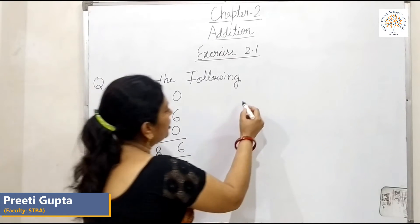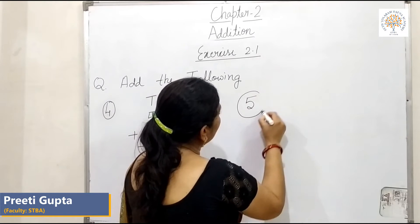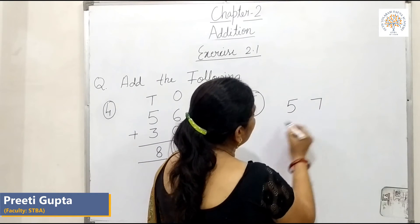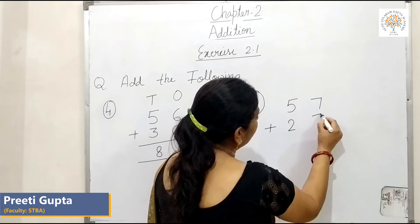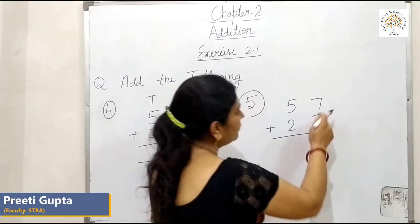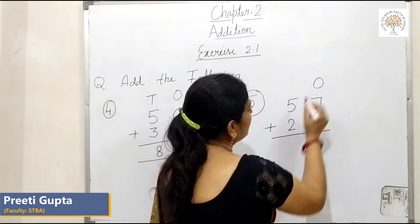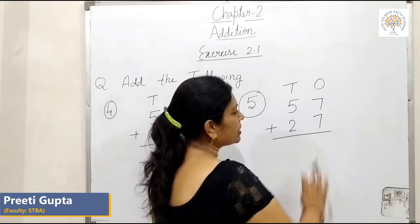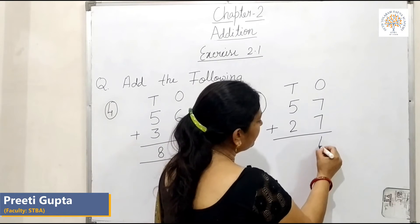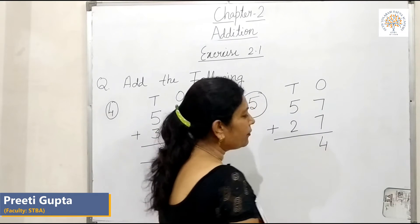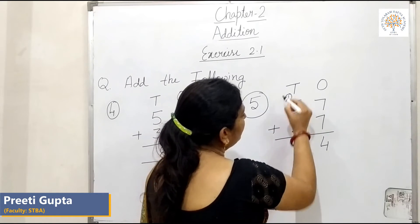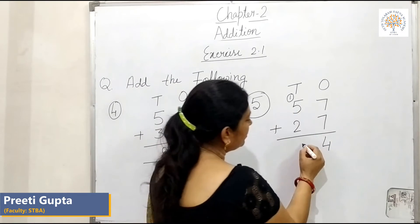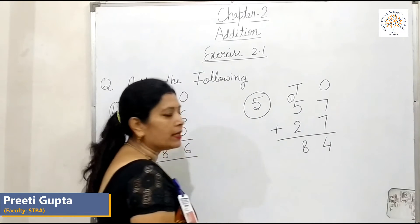Question number 5: 57 plus 27. 7 and 7 are in the 1's place, and 5 and 2 are in the 10's place. 7 plus 7 is 14 — we write 4 here and carry 1. 5 plus 2 is 7, plus the carried 1 is 8. So our answer is 84.